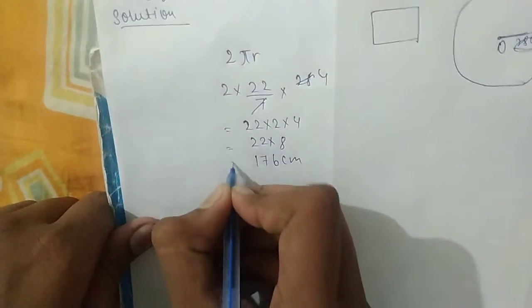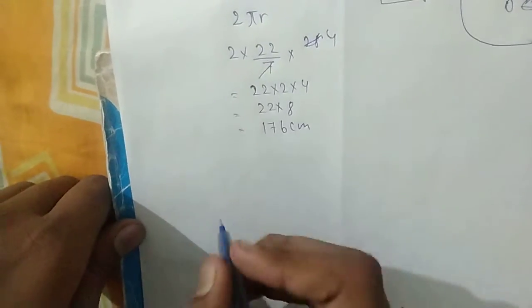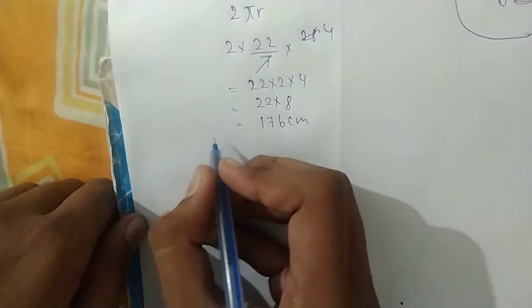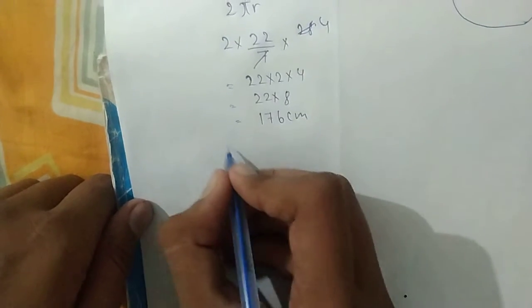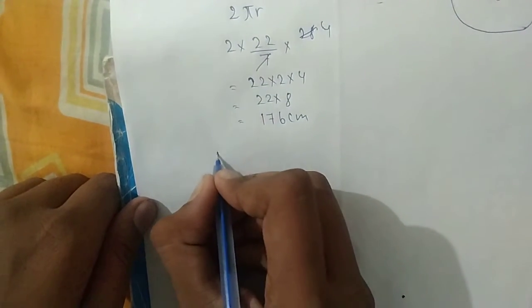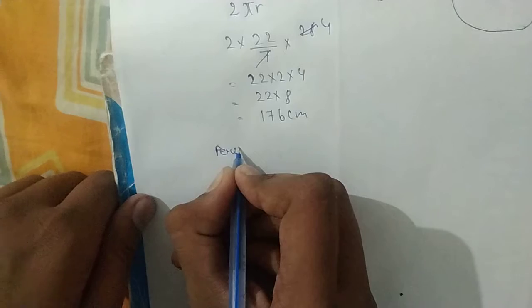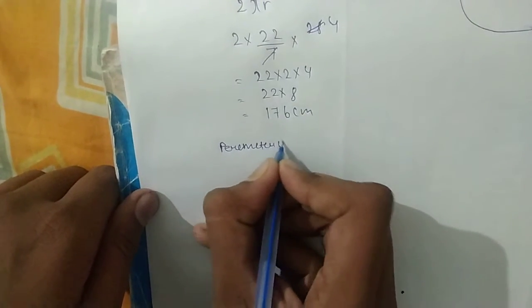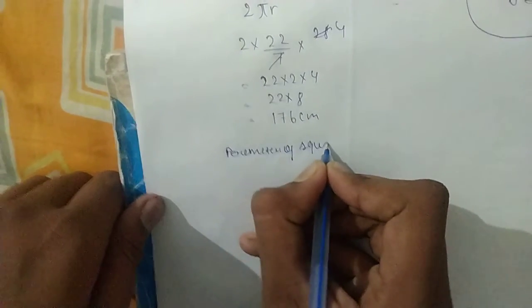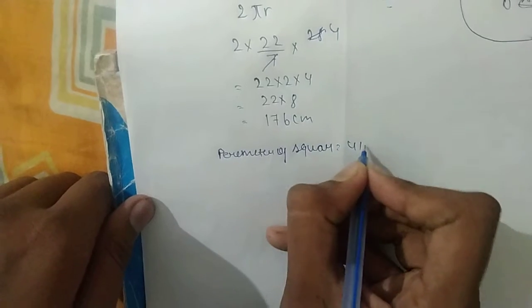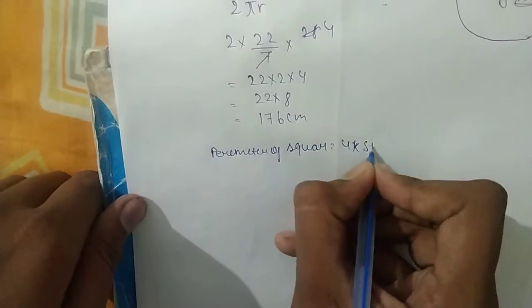Multiply it. Now we will write, now area of square—how much will it be? Perimeter of square, of square 4 into, 4 into side.